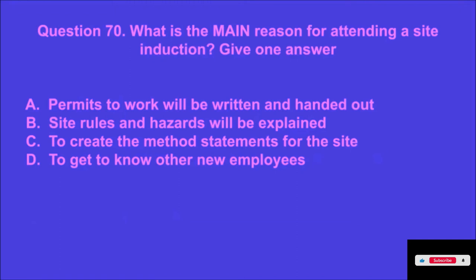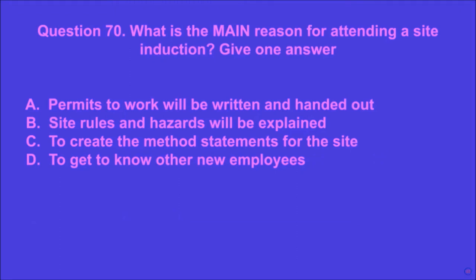Question 70: What is the main reason for attending a site induction? Give one answer. A: permits to work will be written and handed out, B: site rules and hazards will be explained, C: to create the method statements for the site, D: to get to know other new employees. B is the correct answer.